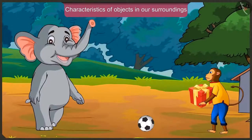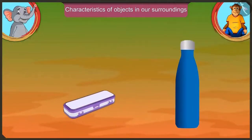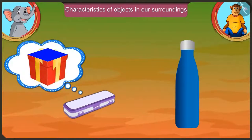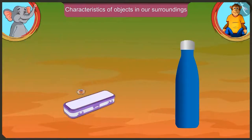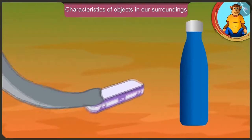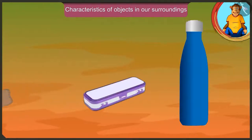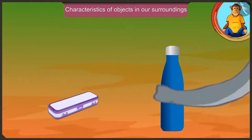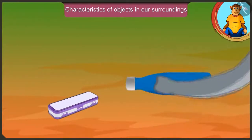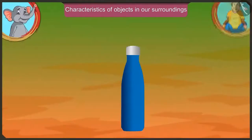Jaggu, what gift did you get for Golu? I have got this pencil box and a water bottle for him. This pencil box also has a flat surface just like your box, so you can slide and move it. And this bottle can be rolled like this.